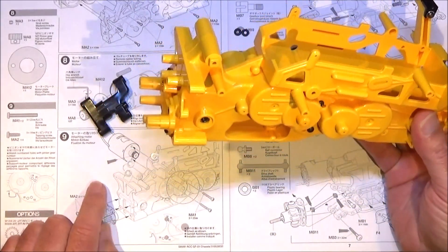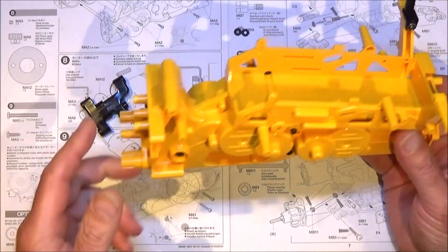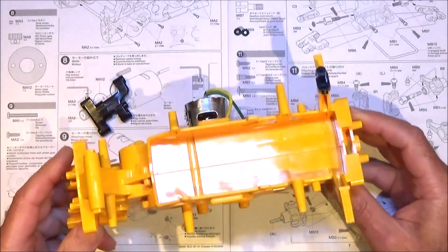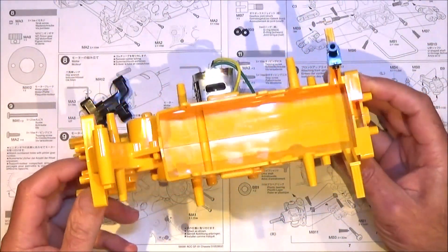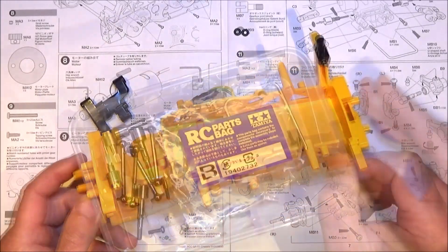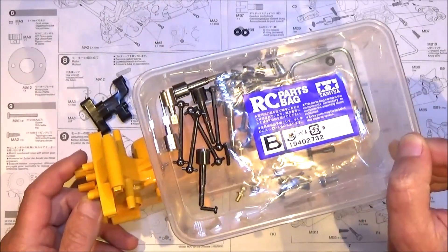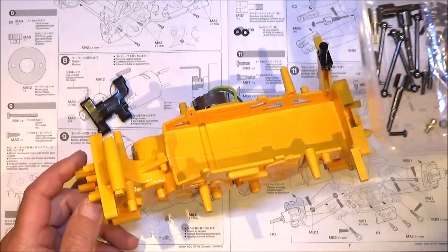We completed up to step nine, which was fitting the motor. Now we're ready to get the suspension mounted to the chassis. Let's crack on with opening parts bag B and we'll get on with step ten.